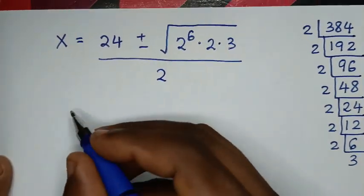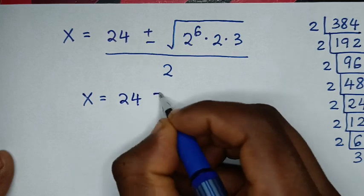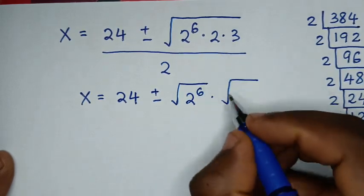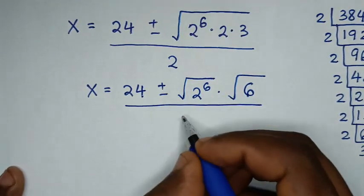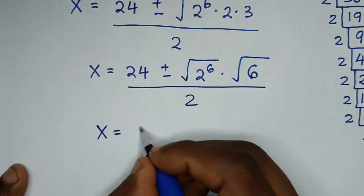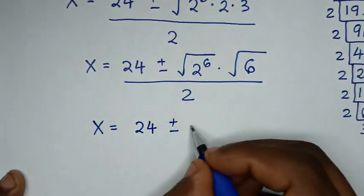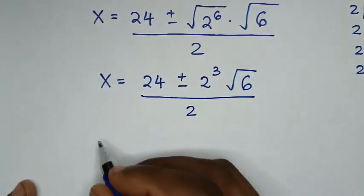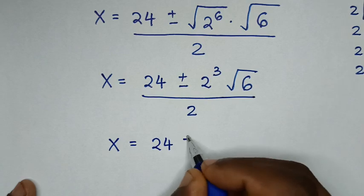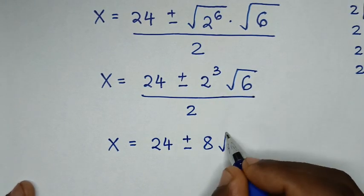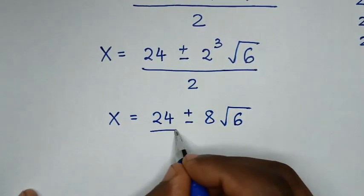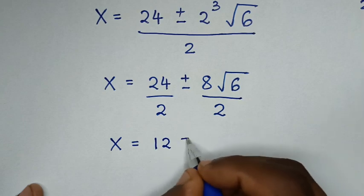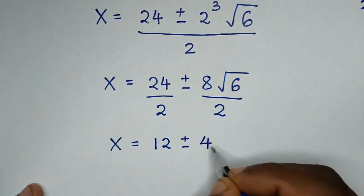Then in the next step, x is equal to 24 plus or minus — we separate the square root of 2 to the power of 6, times the square root of 2 times 3, which is 6. So it will be x is equal to 24 plus or minus square root of 2 to the power of 6, which is 2 to the power of 3, then times the square root of 6, over 2. Then it will be x is equal to 24 plus or minus 8 square root of 6, over 2. We divide by 2: 24 divided by 2 is 12, plus or minus 8 divided by 2 is 4, times square root of 6.